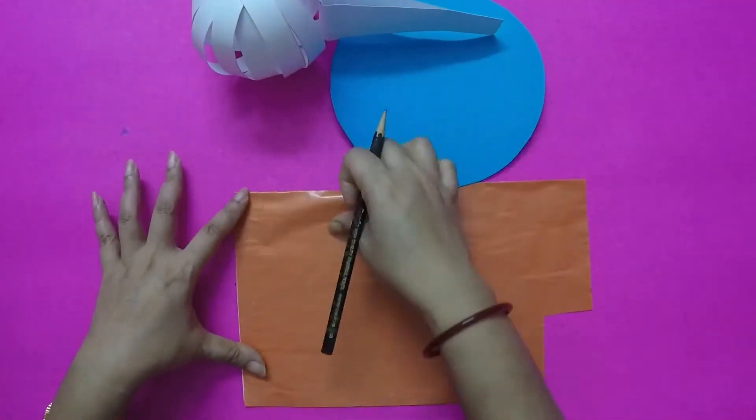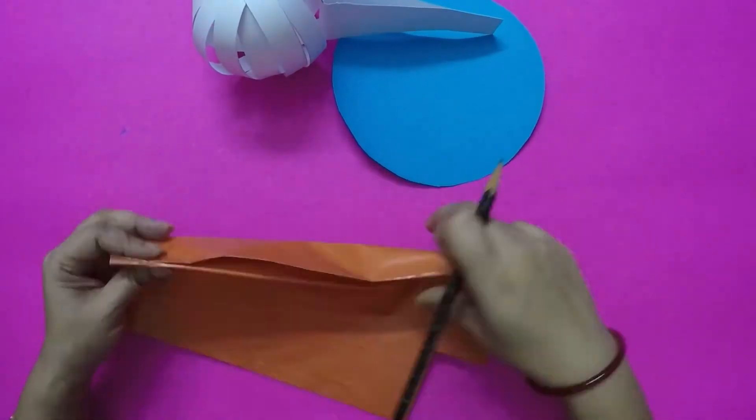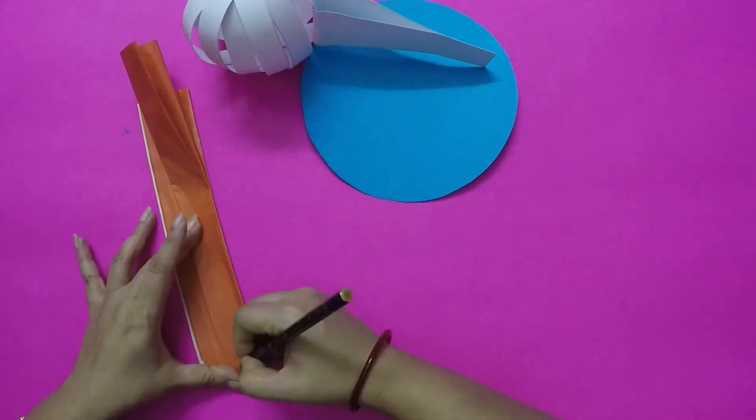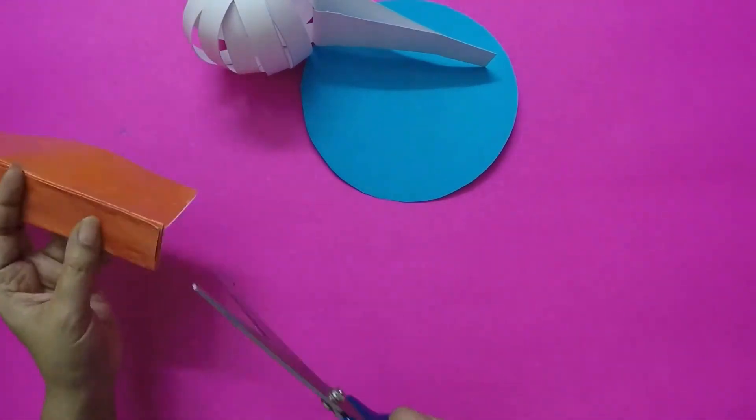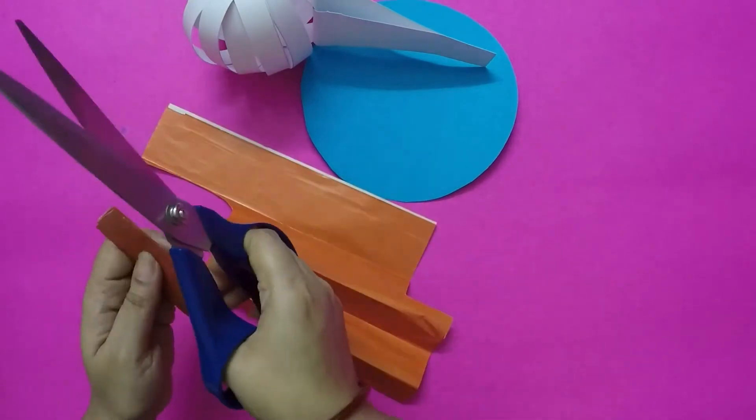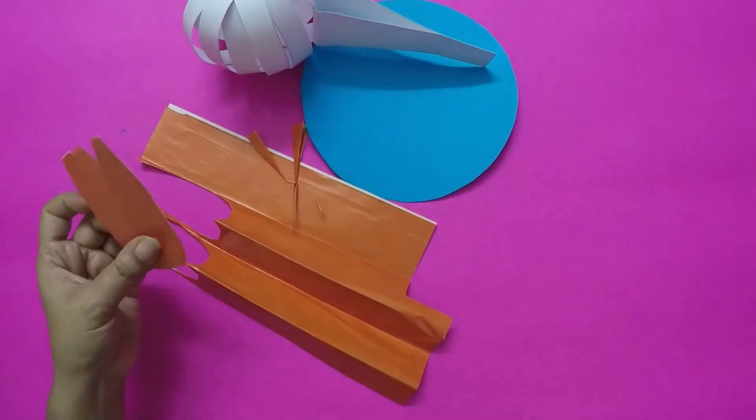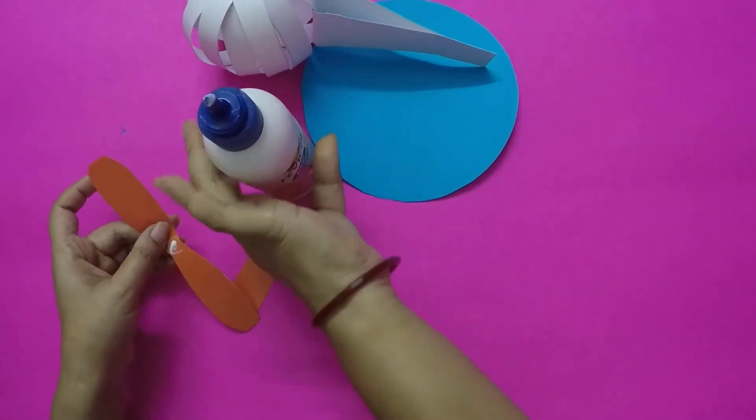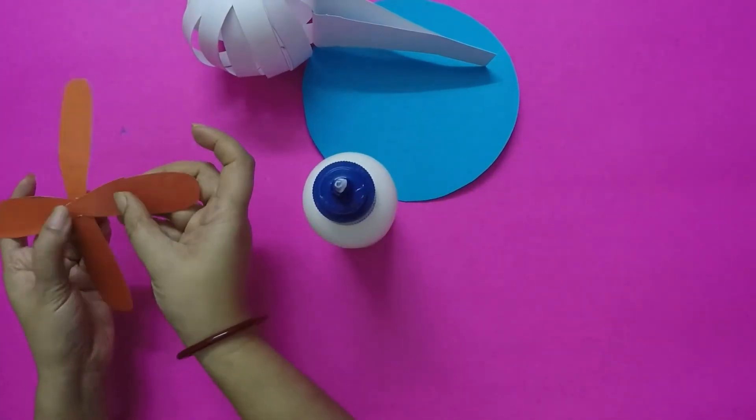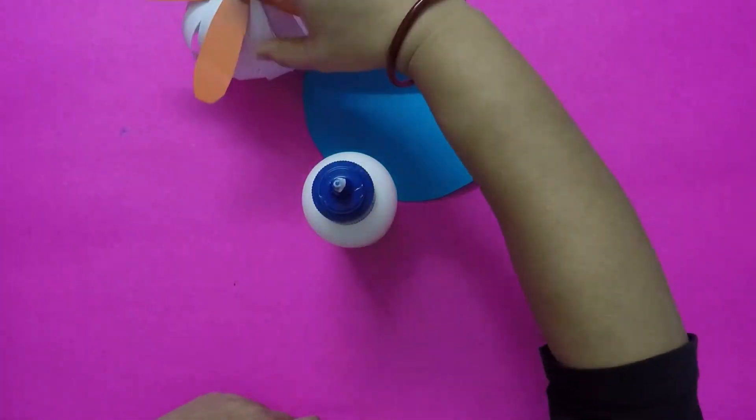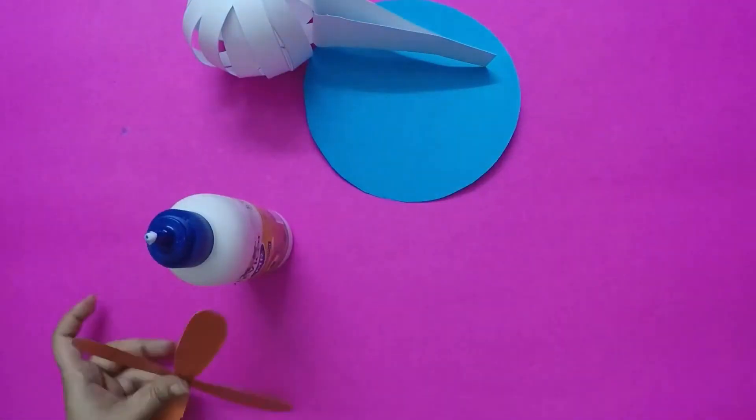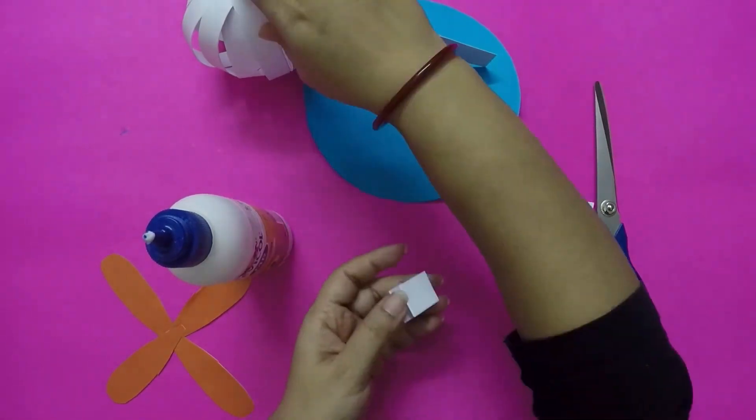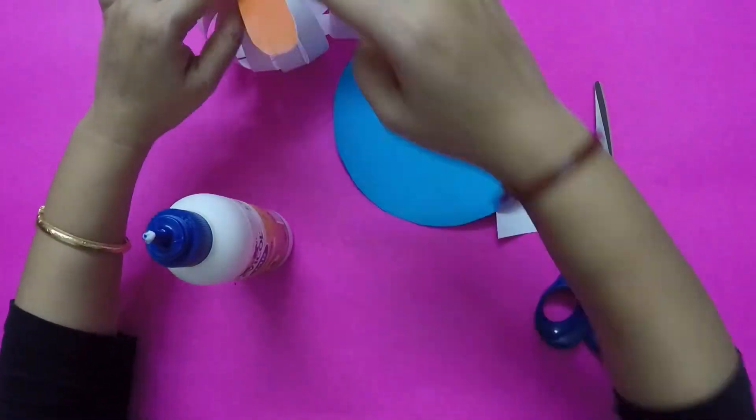Take orange paper and make the blades of the helicopter like this.